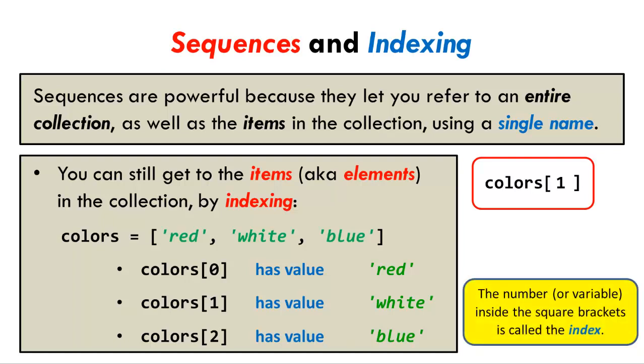The number in the square brackets is called the index, and the things in the sequence are called the items, or equivalently the elements of the sequence. We use the words items and elements interchangeably.